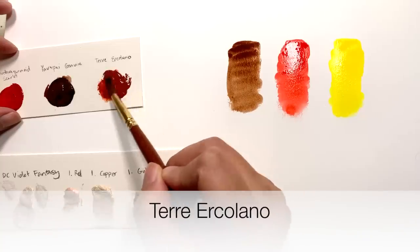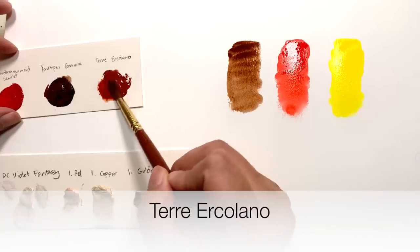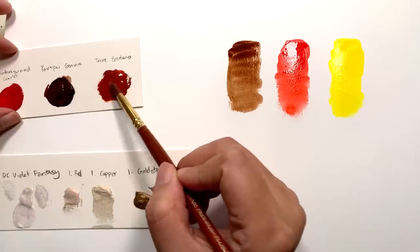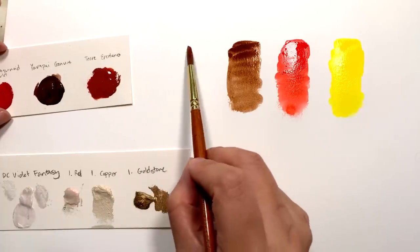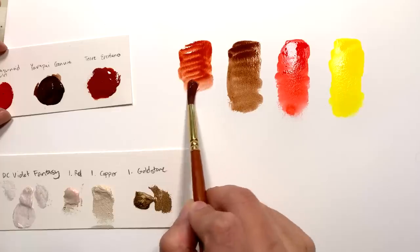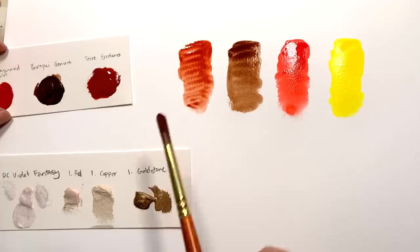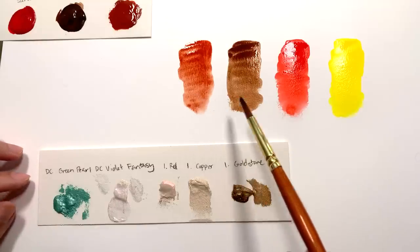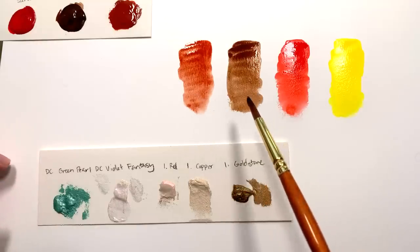And then Terra Ercolano. My goodness, my pronunciations are terrible today. Please do laugh at me for my pronunciations. They are really nice colors. I would say that is a red squirrel color and that is a brown bear color.